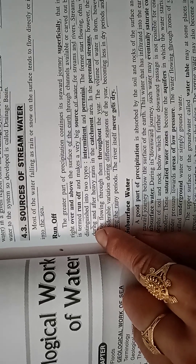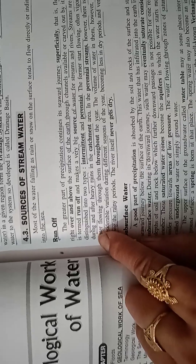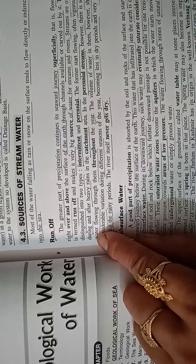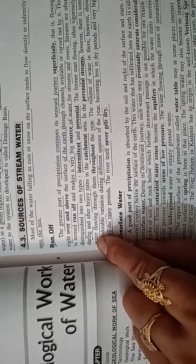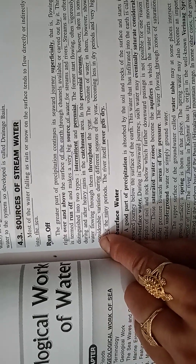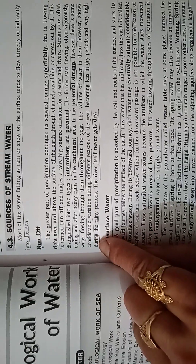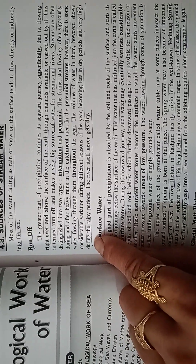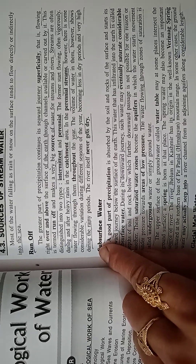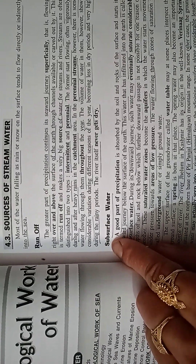Streams are often distinguished into two types: intermittent or perennial. The former start flowing, often vigorously, during and after heavy rains in the catchment area. In perennial streams, however, there is some water flowing throughout the year. The volume of water shows considerable variation during different seasons, becoming less in dry periods and very high during rainy periods, but the rivers themselves never get dry.